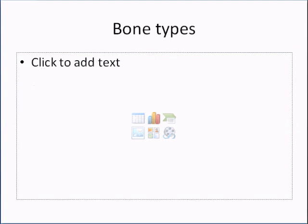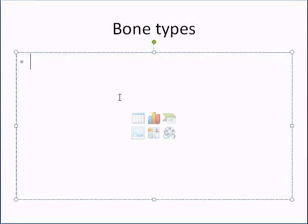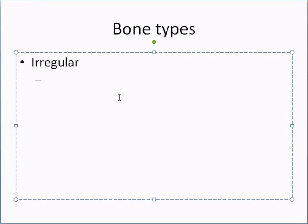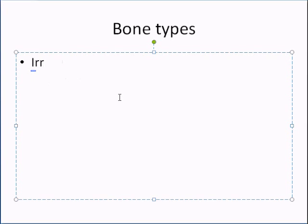Irregular bones are bones that don't specifically fit the other structures — they're not flat and not particularly long. An example would be your vertebral column bones. The vertebrae, like C1, C2, and the rest, would be classified as irregular bones. And then we have flat bones.